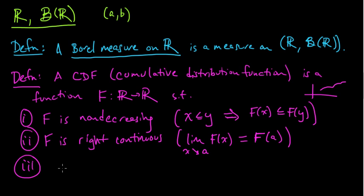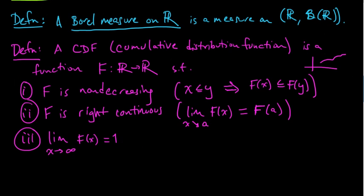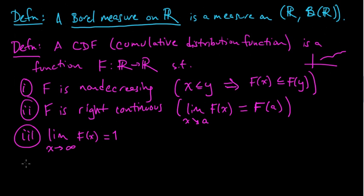And three, as X converges to, as X goes to infinity, F of X converges to one. And one more condition, four. As X goes to minus infinity, F of X goes to zero. So there's four conditions for a CDF, cumulative distribution function.